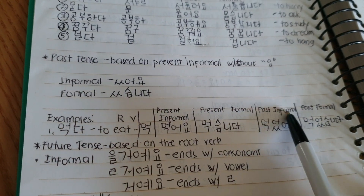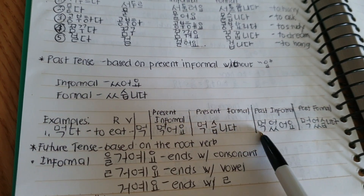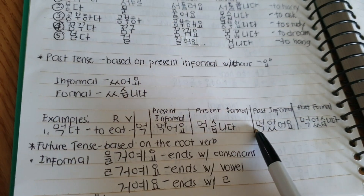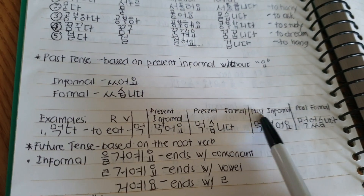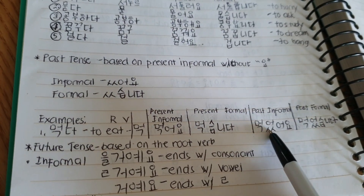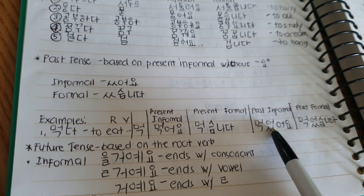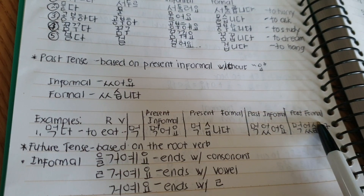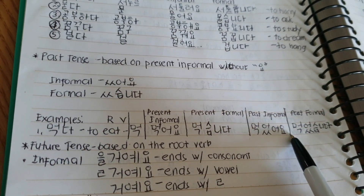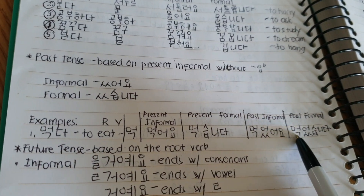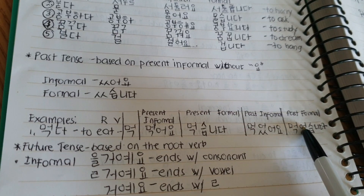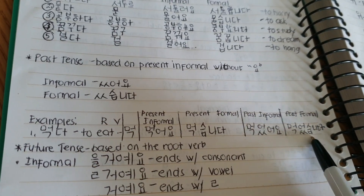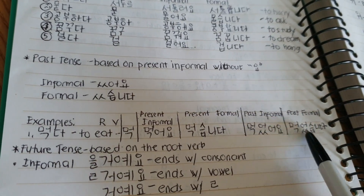The past informal is 'mog-eoyo' with 'ss' added — 'mogeoSSeoyo'. For the past formal, you get the root 'mok', add the past marker 'ss', then 'sumnida' — giving 'mogeoss-sumnida', meaning 'ate' in English.